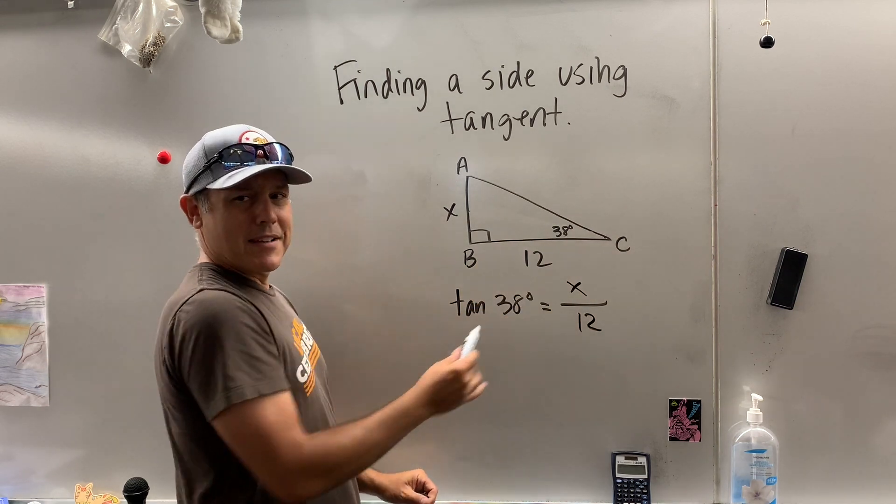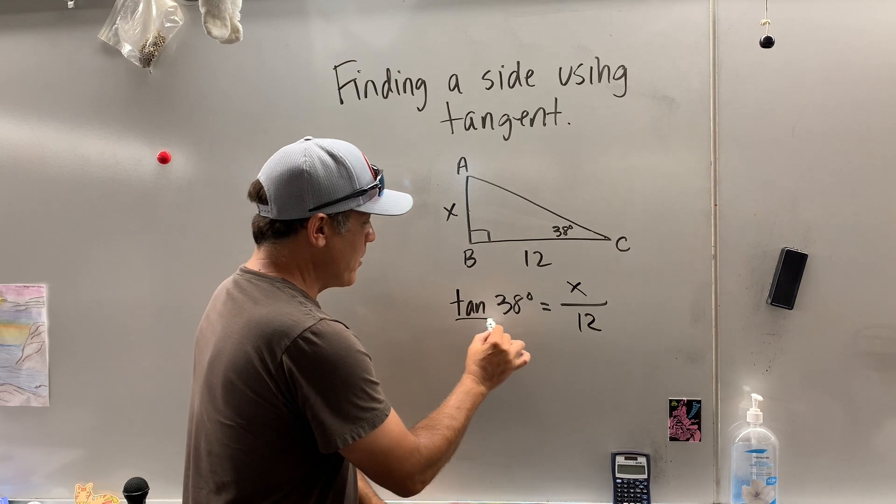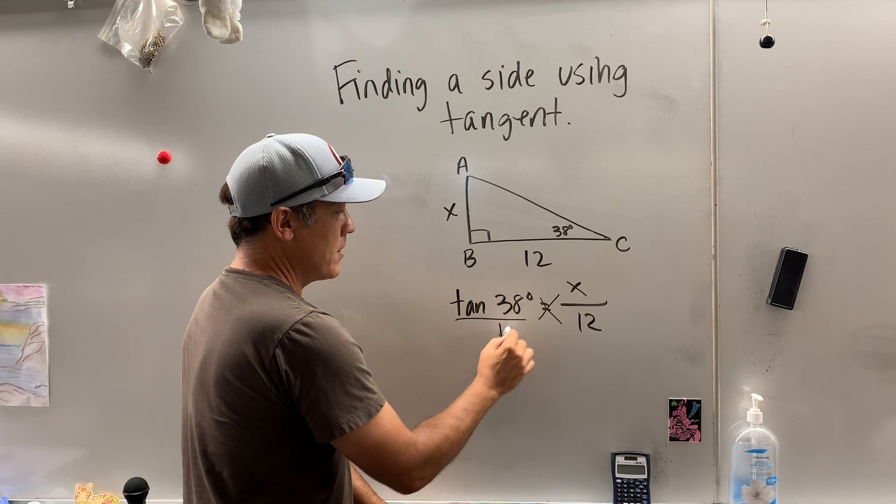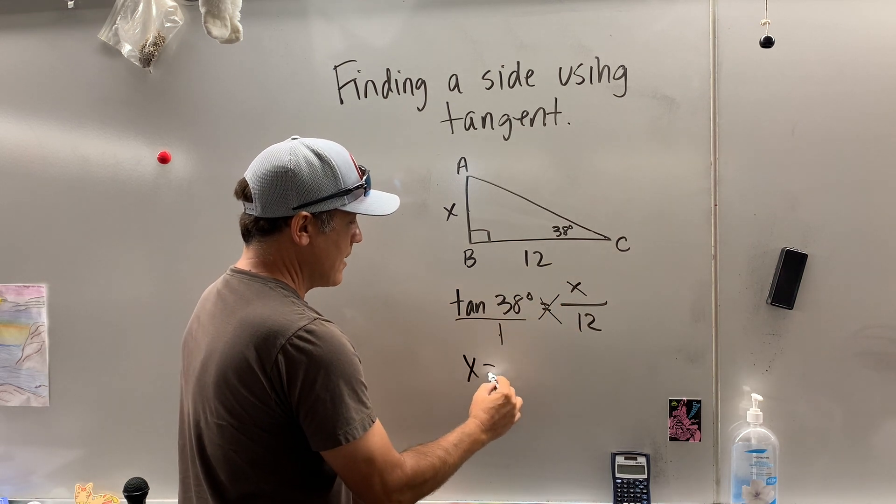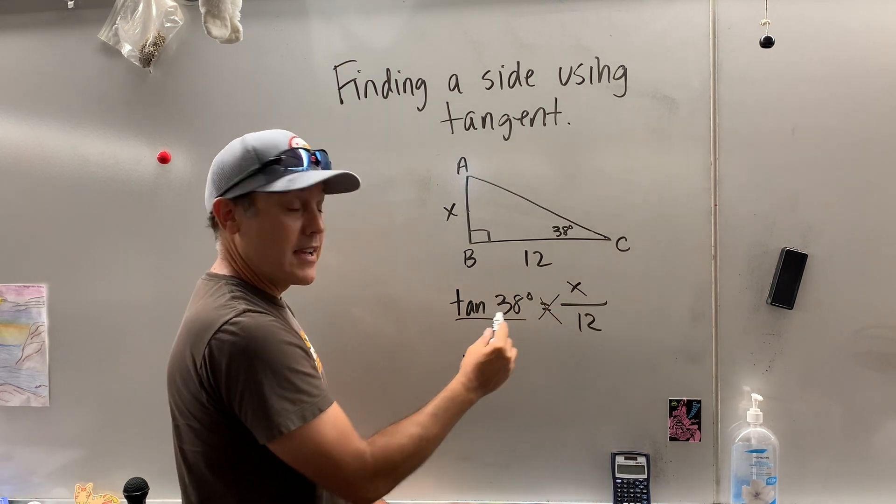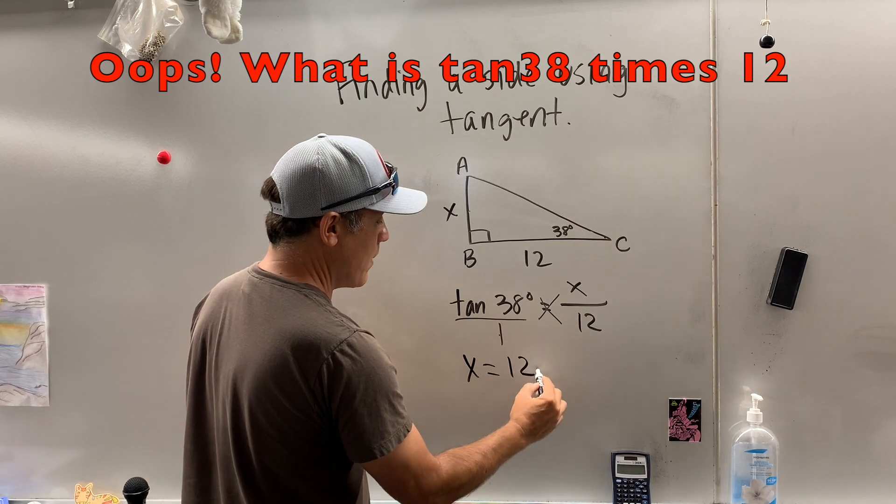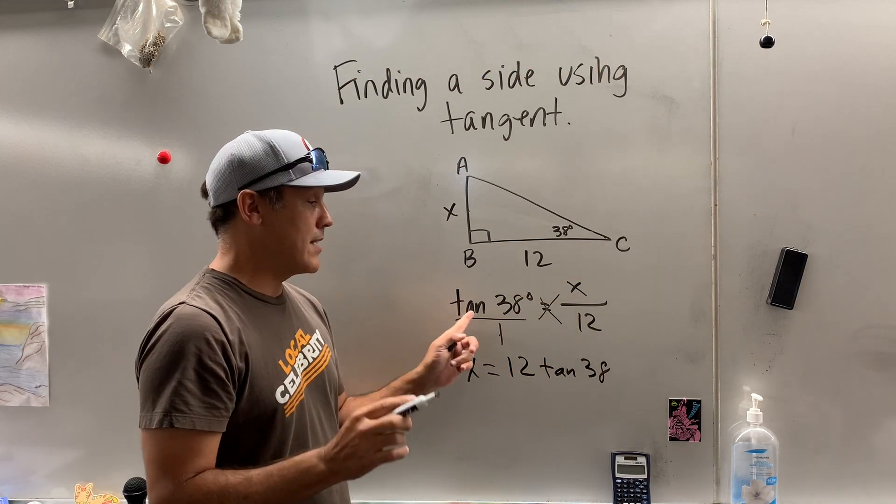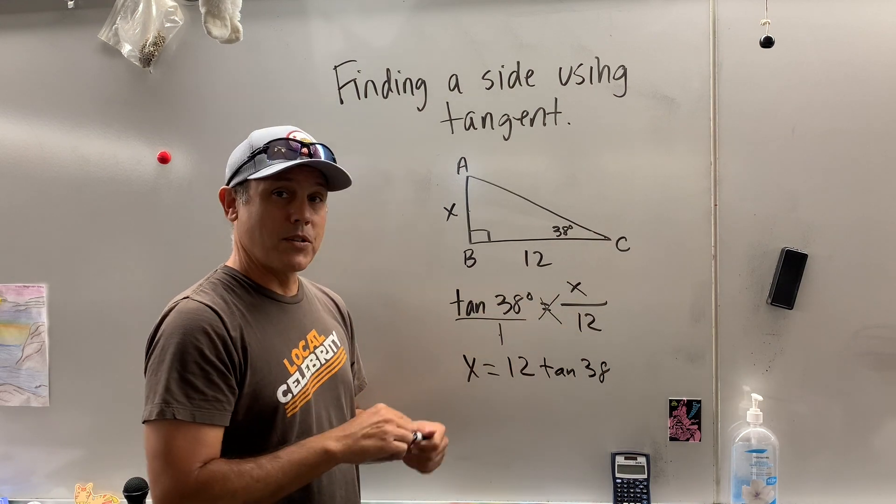So now we got to solve this thing. I like putting this over 1, it just makes it visually appealing. So then we just cross-multiply. What is 1 times x? x. And what is tangent times 38? Well, you have to write it like this: 12 tangent 38. Do not write tangent 38 times 12. It will be a total nightmare.